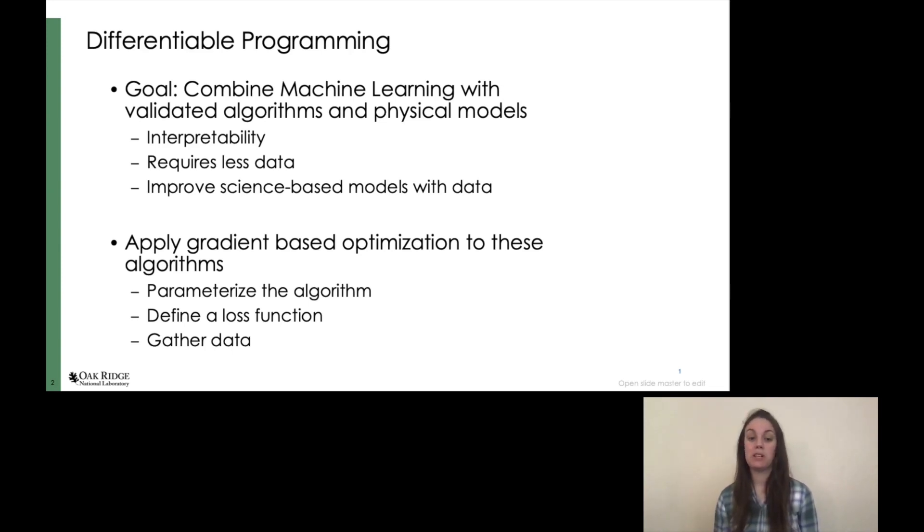So how do we do differentiable programming? We'll use Zygote to apply gradient-based optimization to these algorithms by parameterizing the model, defining a loss function, and gathering data for training. In our case, we will do this with the dark channel prior in order to improve a de-hazing algorithm.